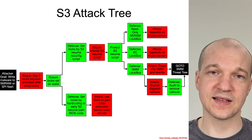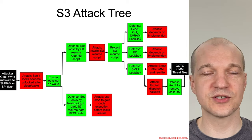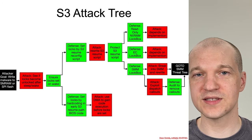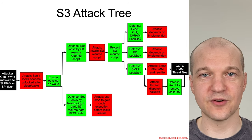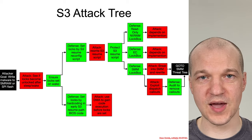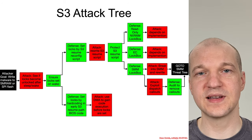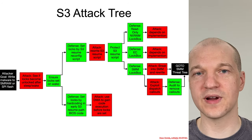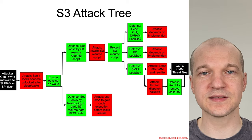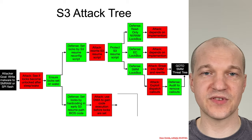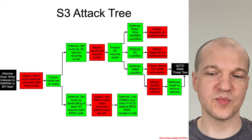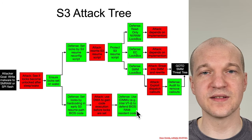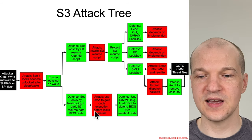The attack against that would be an attacker could try to gain code execution if the thing is actually executing from RAM at that point, and gain code execution before it actually sets those hard-coded locks. The defense against that would be using an IOMMU like Intel VTD to defend against DMA attacks.